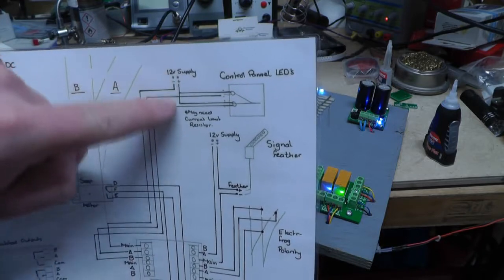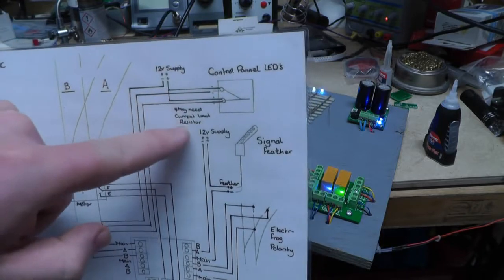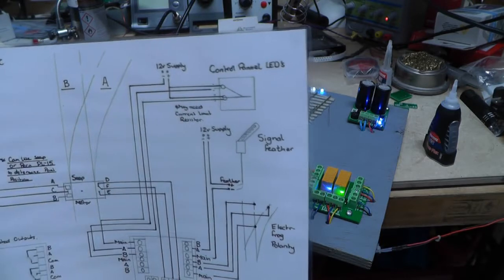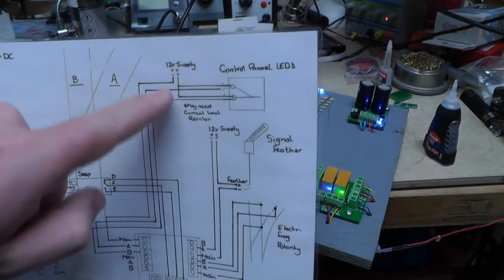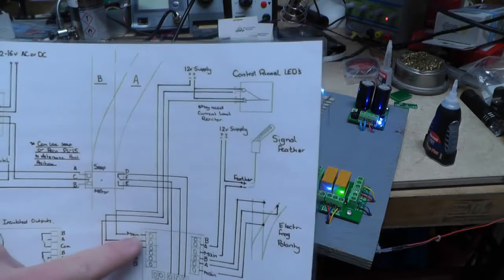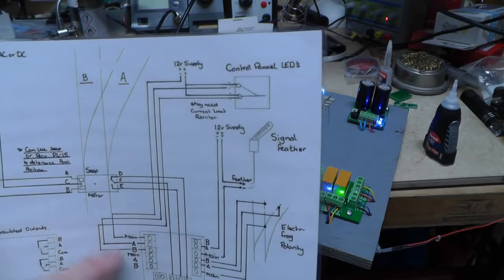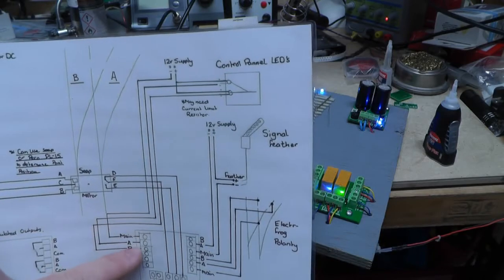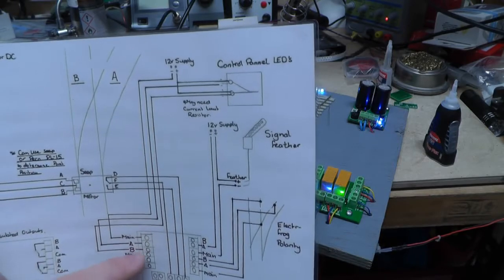And same with the controls. So we've got a 12 volt supply here, goes to the positive of both LEDs. There may be a need for a resistor in there just for current limiting. So then you've got your A and your B and your negative. So your negative comes down into the main or common, and depending on the A and B position, you connect the LEDs up to A or B.